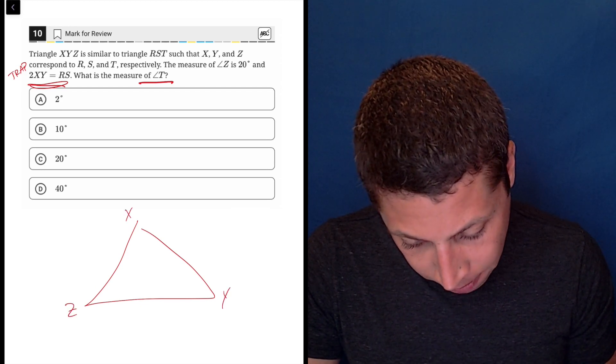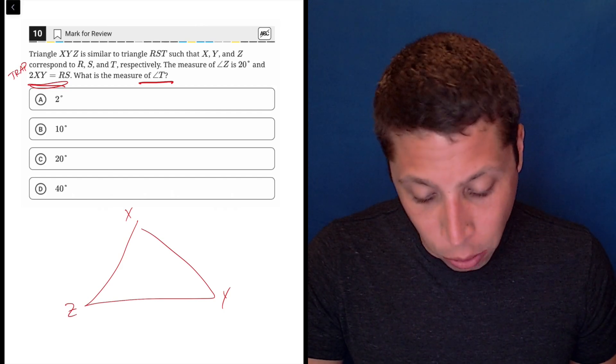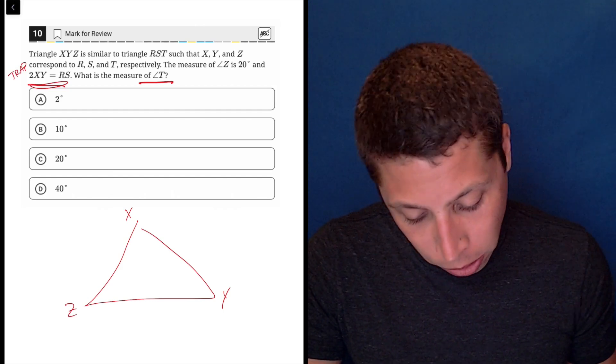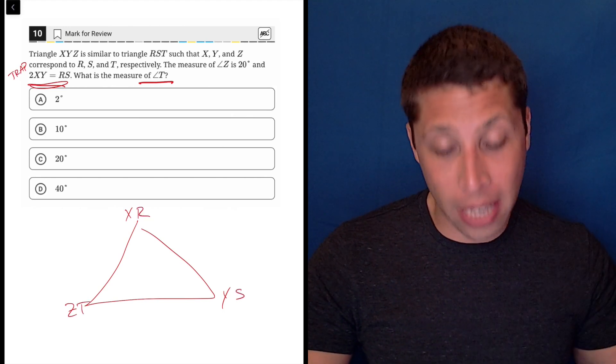Triangle XYZ is similar to triangle RST such that X, Y, and Z correspond to R, S, T. So thankfully everything's in the right order. So X, Y, Z, R, S, T, right? So that matches up.